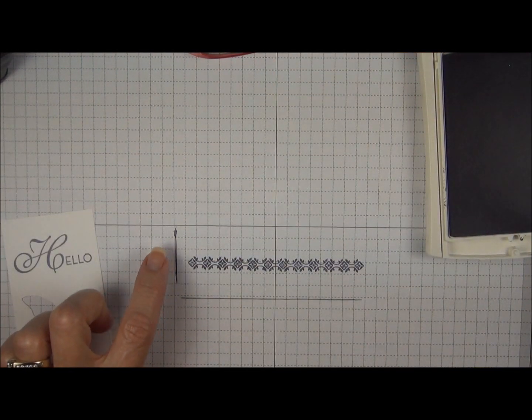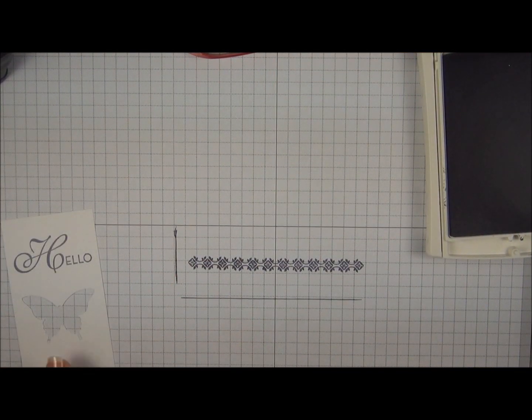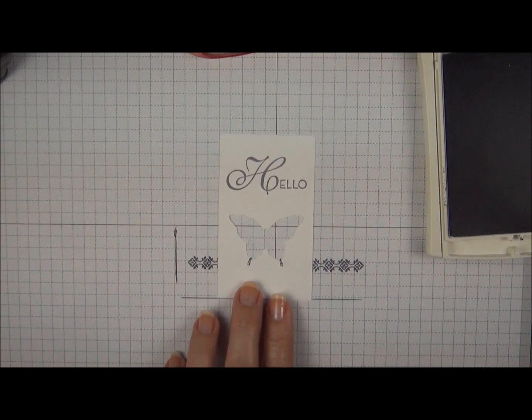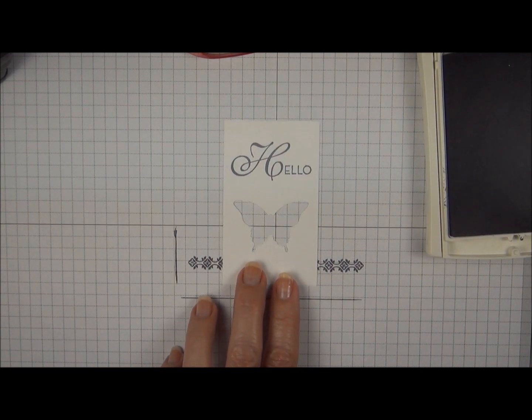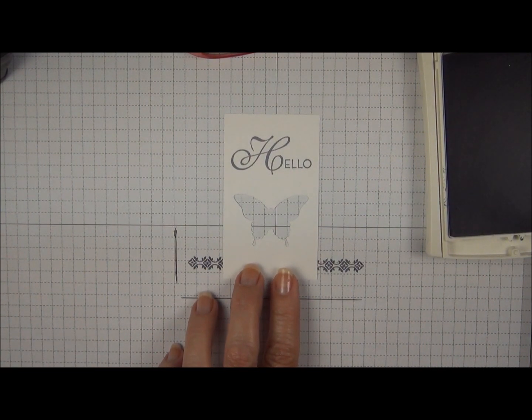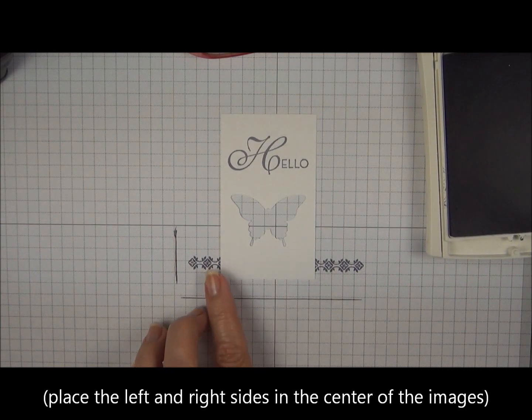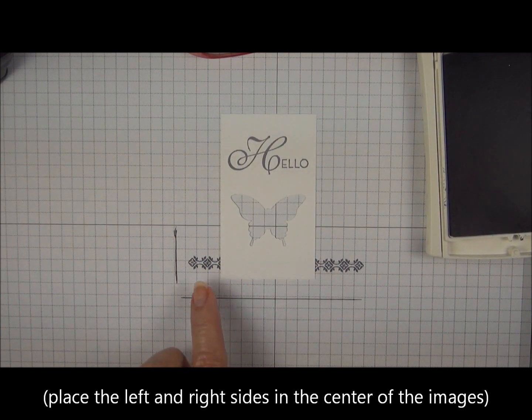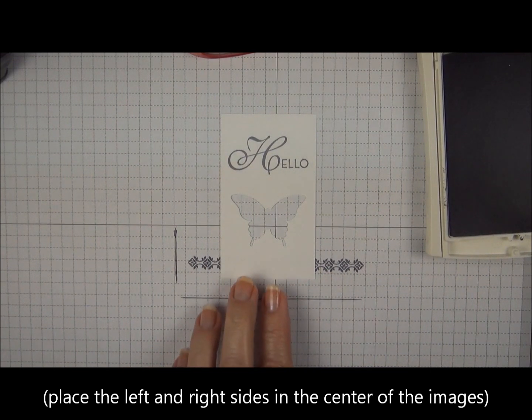So this is going to tell me where to line up the block, the left side and the bottom. Now what I can do is slide this over and I'm going to get this right up where I want the image to be and I'm going to center the sides of the card stock into the middle of one of these images.